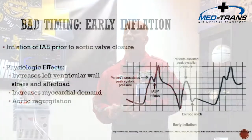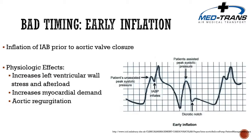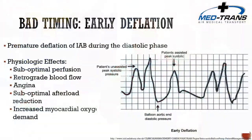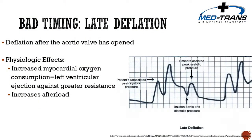Early inflation — prior to aortic valve closure — causes increased left ventricular wall stress, increased afterload, increased oxygen demand, and possible aortic regurgitation. Late inflation after aortic valve closure results in sub-optimal perfusion. Early deflation during the diastolic phase causes sub-optimal perfusion, possible retrograde blood flow, possible angina, sub-optimal afterload reduction, and increased MVO2. Late deflation — after the aortic valve has opened — increases myocardial oxygen consumption, causes left ventricular ejection against greater resistance, and increases afterload.